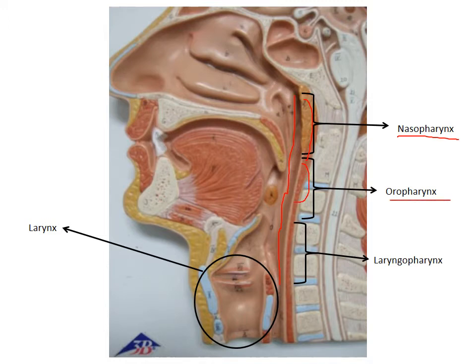The part that's behind what we'll call the larynx is called the laryngopharynx. So there are three subsections of the tube we call the pharynx. Now, I want you to know that the larynx is an area — it's not a single structure. There are going to be some structures we'll look at in the larynx, but the larynx itself is an area.